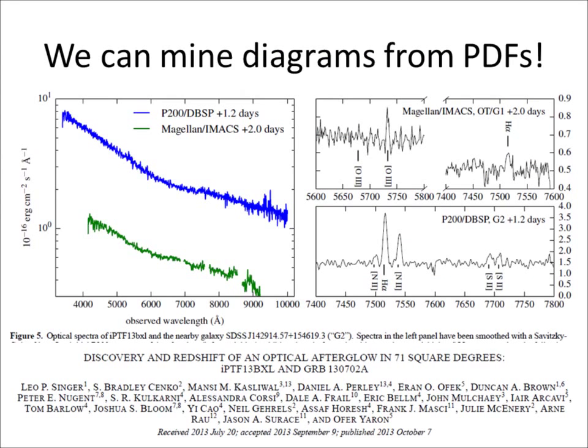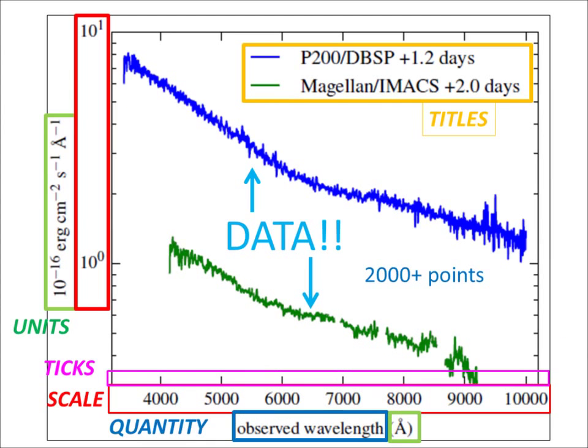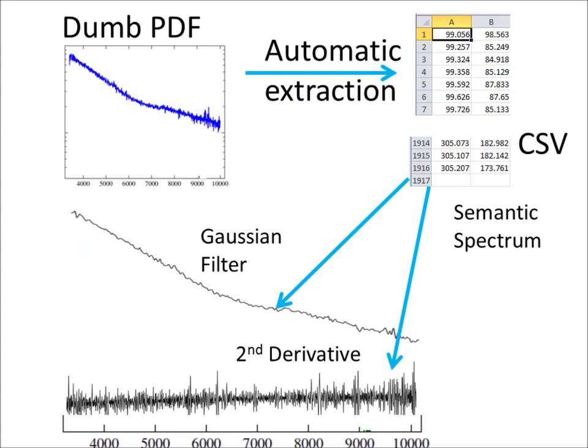We can also do that with graphs. Here's a graph — look at the blue graph here. Zoom in on it, and now we can see the axes, the scales. There are actually 2000 data points. We extract them into a CSV file, and then we can do numerical analysis like second derivatives.